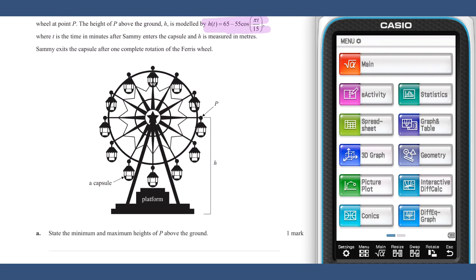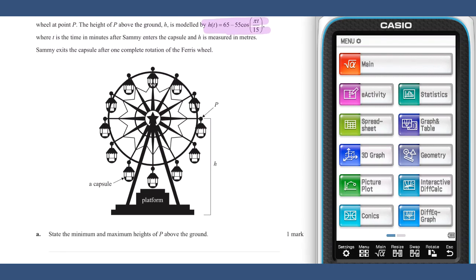Using this function, we can find the maximum and minimum heights of point P. The minimum height will be equal to 65 minus 55, or 10 metres, and the maximum height will be equal to 65 plus 55, a whopping 110 metres above the ground.